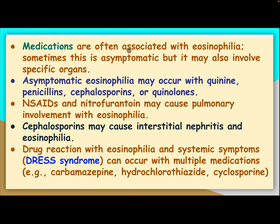Medications are often associated with eosinophilia. Sometimes this is asymptomatic but may also involve specific organs. Asymptomatic eosinophilia may occur with quinidine, penicillin, cephalosporins, or quinolones. Non-steroidal anti-inflammatory drugs and nitrofurantoin may cause pulmonary involvement with eosinophilia. Cephalosporins may cause interstitial nephritis and eosinophilia. Drug reaction with eosinophilia and systemic symptoms (DRESS syndrome) can occur with multiple medications like carbamazepine, hydrochlorothiazide, and cyclosporine.